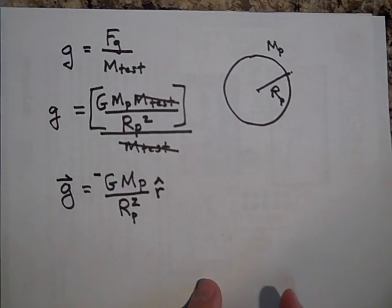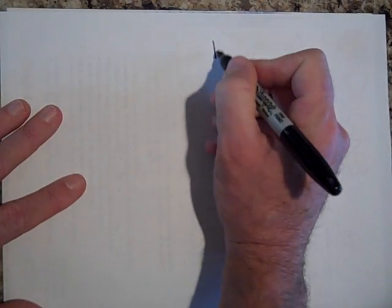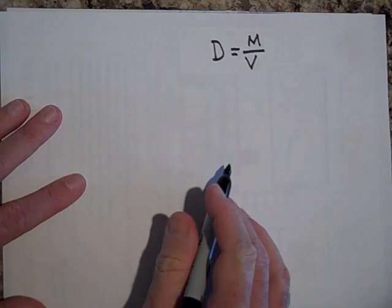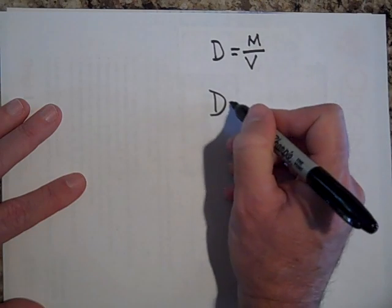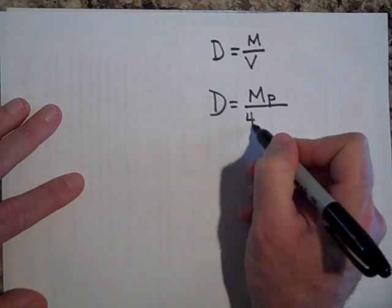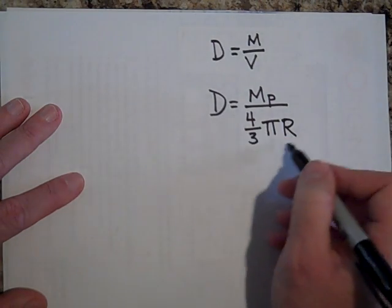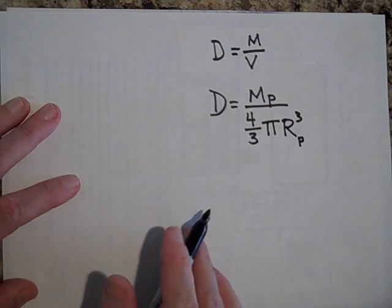I want to show you one other thing that has to do with density. Sometimes they want to put g in terms of the density of a planet. And so what we're going to do is the density of a planet, the average density, let's say is the mass per volume. That's what density is. So it would be the mass of the planet divided by the volume of a planet. Now the volume of a planet, planets are pretty much spheres, we're going to treat them like spheres. And the volume of a sphere is four thirds pi r cubed, R sub p meaning the radius of the planet.